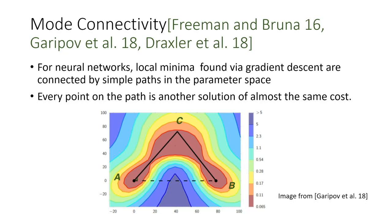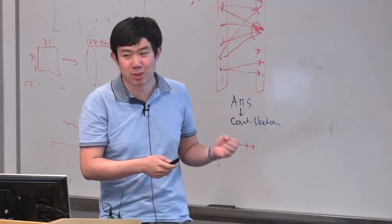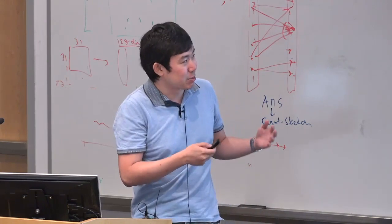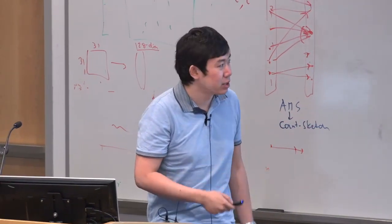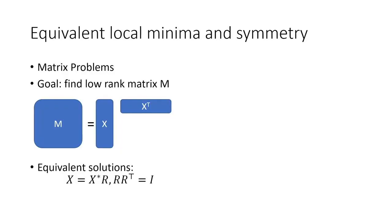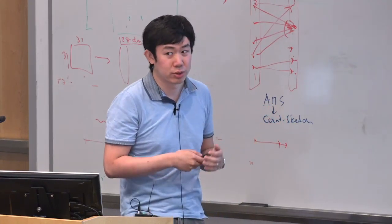Every point on this path is another solution of the neural network of almost the same cost. This might not be super surprising if you were here for Leon's talk on Monday, since he was talking about a very similar phenomenon. But let me explain why it was very surprising to me. I've been thinking about local minima and symmetry in non-convex optimization. For problems we understand, there are two types: matrix problems and tensor problems.